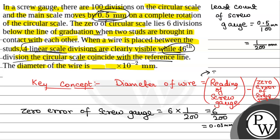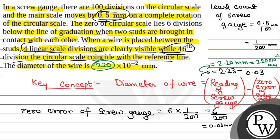Diameter of wire = screw gauge reading − zero error = 2.23 mm − 0.03 mm = 2.20 mm = 220 × 10 to the power minus 2 mm. So the diameter of the wire is 220 × 10⁻² mm, and the final answer will be 220.